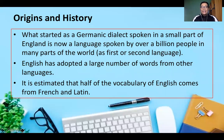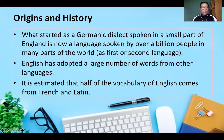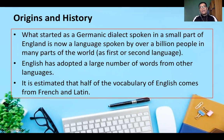What started as a Germanic dialect spoken in a small part of England is now a language spoken by over a billion people in many parts of the world, either as a first or second language. English has adopted a large number of words from other languages, and it is estimated that half of the vocabulary of the English language comes from French and Latin.